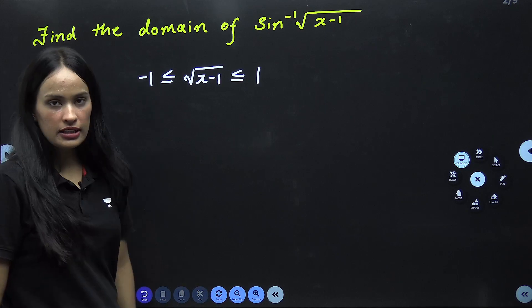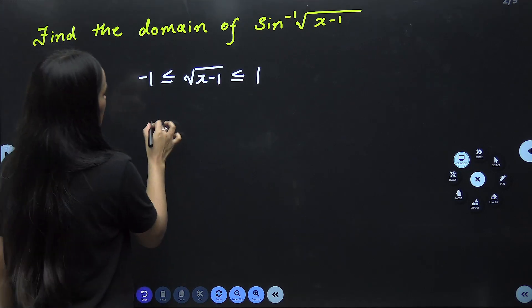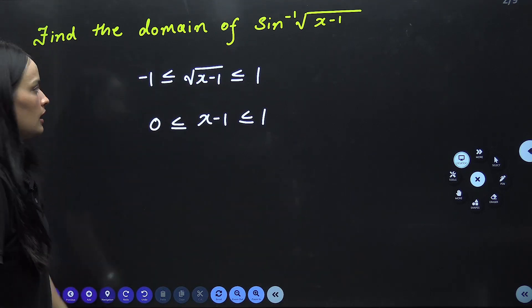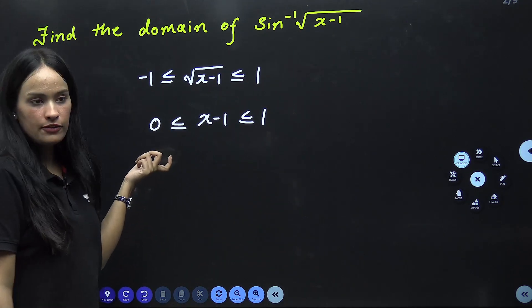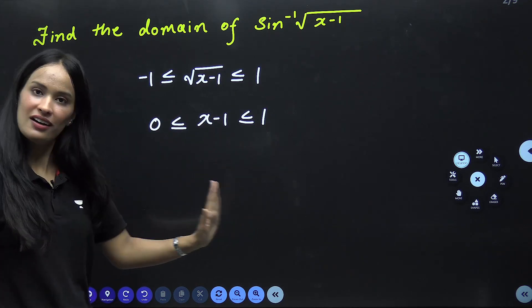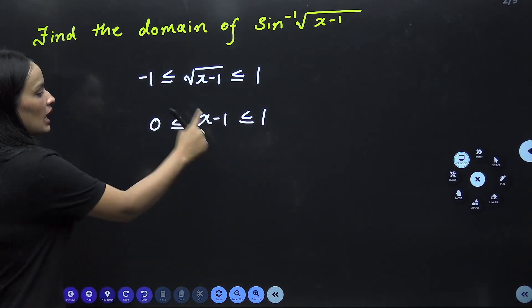You will write here that root x minus 1, sin inverse, this will be minus 1 and it will be under 1. Okay? Now you will square it. So what will you get? 0, this will be x minus 1, and this will be 1. Right? If you square it here, you will not write positive 1 to 1. Positive what will it be? 0 to 1.